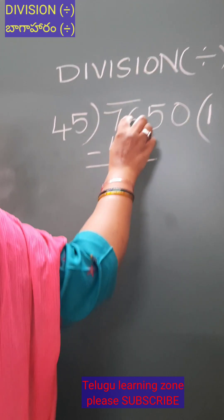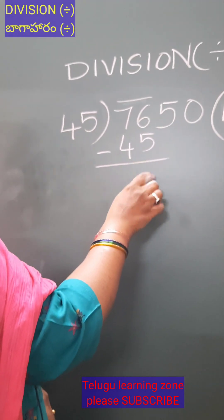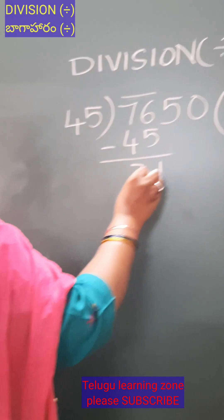Now subtraction: 6 minus 5 is 1, 7 minus 4 is 3. Okay.